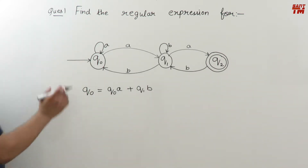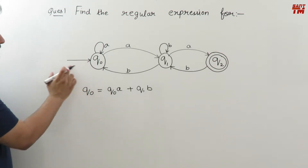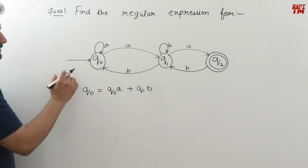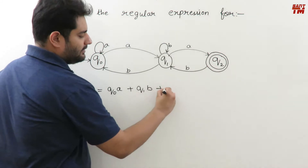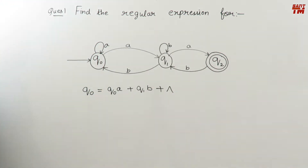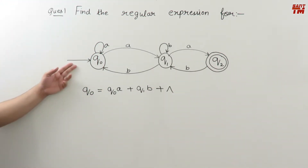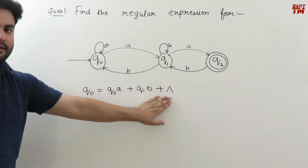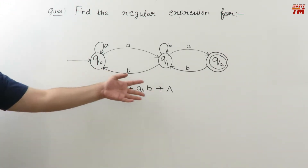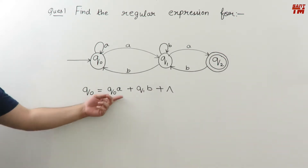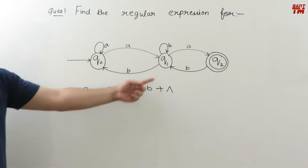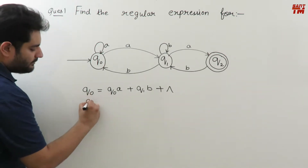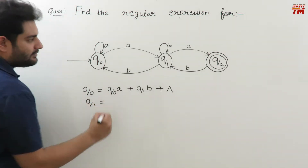We see all the incoming edges and multiply that input symbol with that state symbol. For the initial state, you have to keep in mind that the initial arrow is also incoming — we always mark this for initial state representation. That arrow is represented by null. So the full state equation is: q0 = null + q0·a + q1·b.